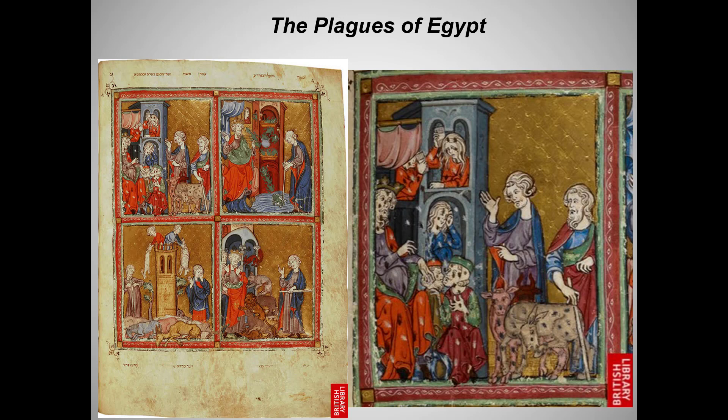A Haggadah is a kind of storybook used during Passover. Why would it contain human images — something as strongly prohibited in Judaism as in Islam? As the assigned essay explained, there was a Haggadah loophole: the Haggadah was considered educational rather than religious. Here we see the plagues descending on Egypt when the Pharaoh refuses to let the Jews leave — a plague of lice, the plague of frogs, disease, and wild animals.